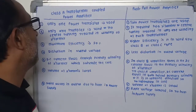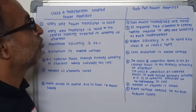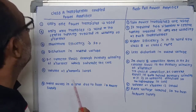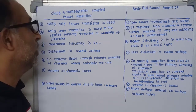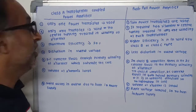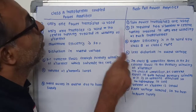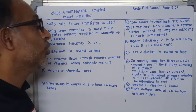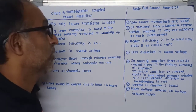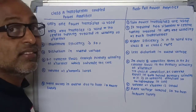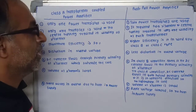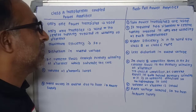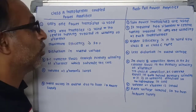Third, in Class A amplifier, distortion occurs in the output voltage, but in push-pull amplifier, less distortion occurs. In Class A, DC current flows through the primary winding of the transformer. In push-pull Class B amplifier, there is no DC current flow in the primary winding. In push-pull, the DC currents in the primary winding flow in opposite directions and cancel each other, meaning there is no saturation in the core of the transformer.